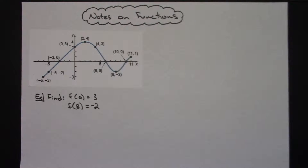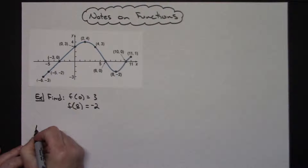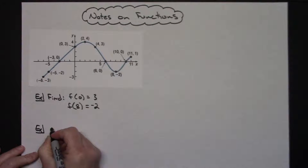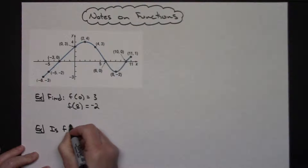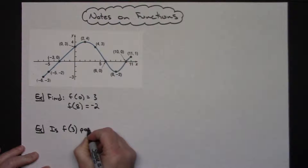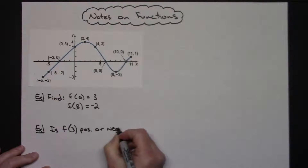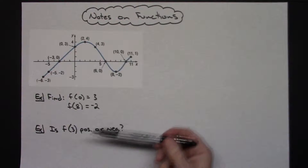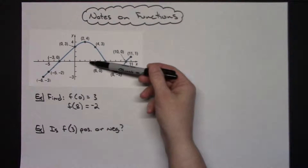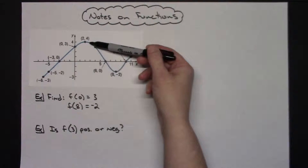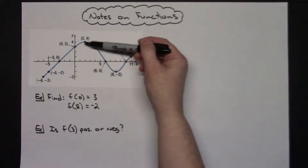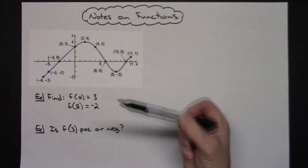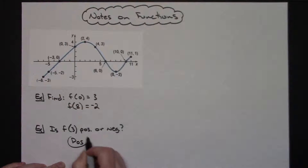Another type of question they might ask: is f of 3 positive or negative? Go to x equals 3 on the graph, go along the x-axis to 3, then up to the function. It's not a specific labeled ordered pair, but I can clearly see the function is above 0, so f of 3 is positive.